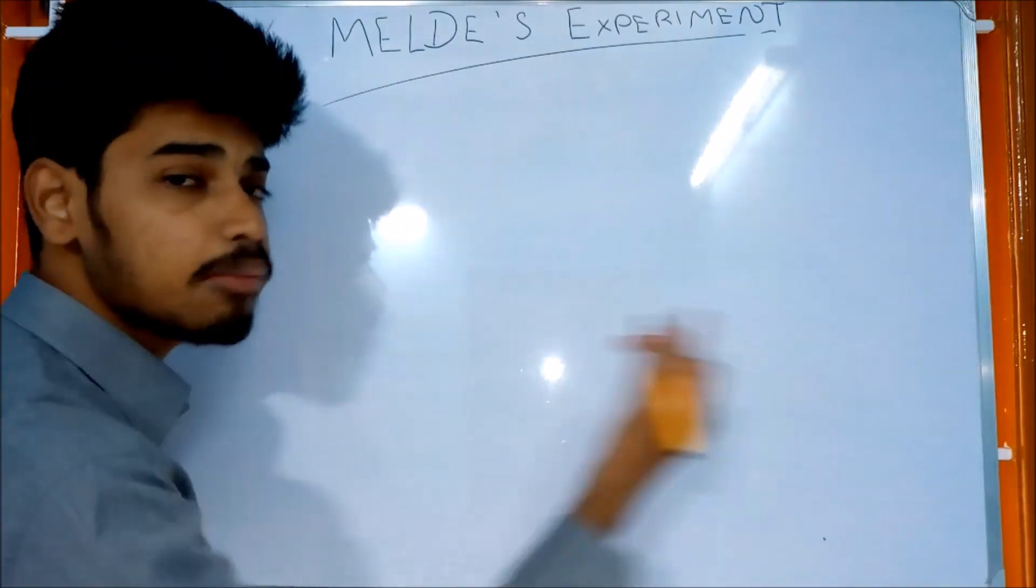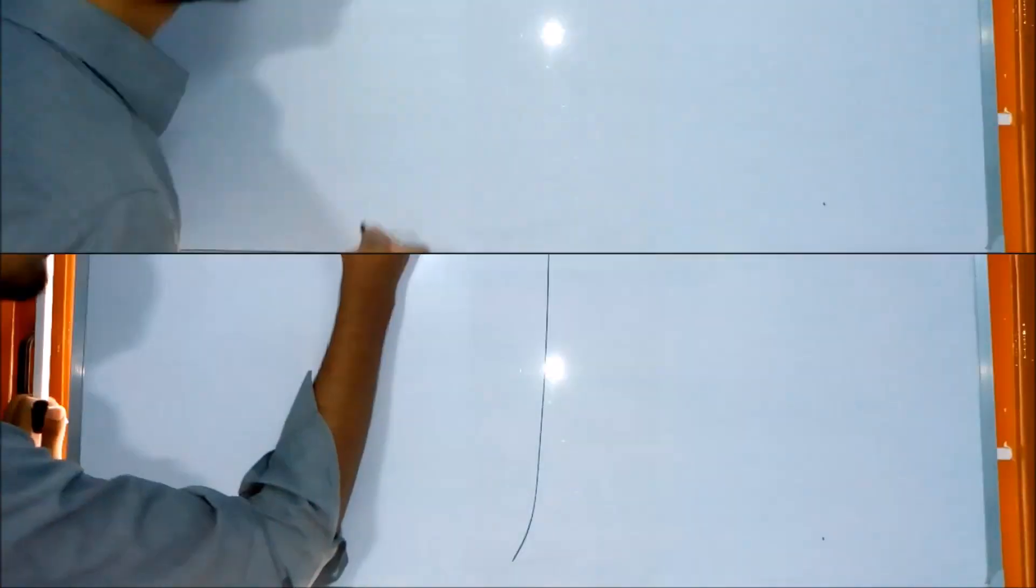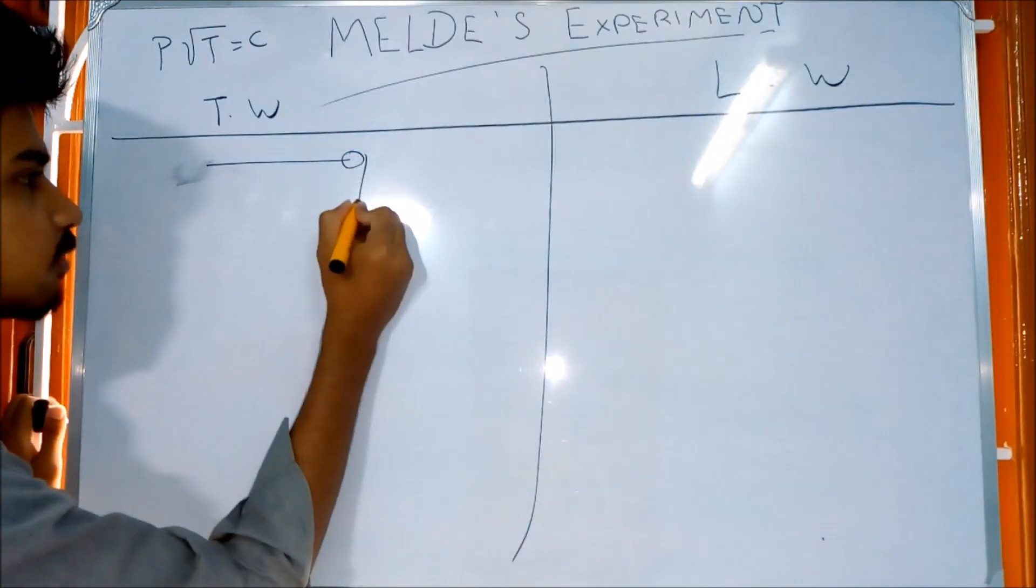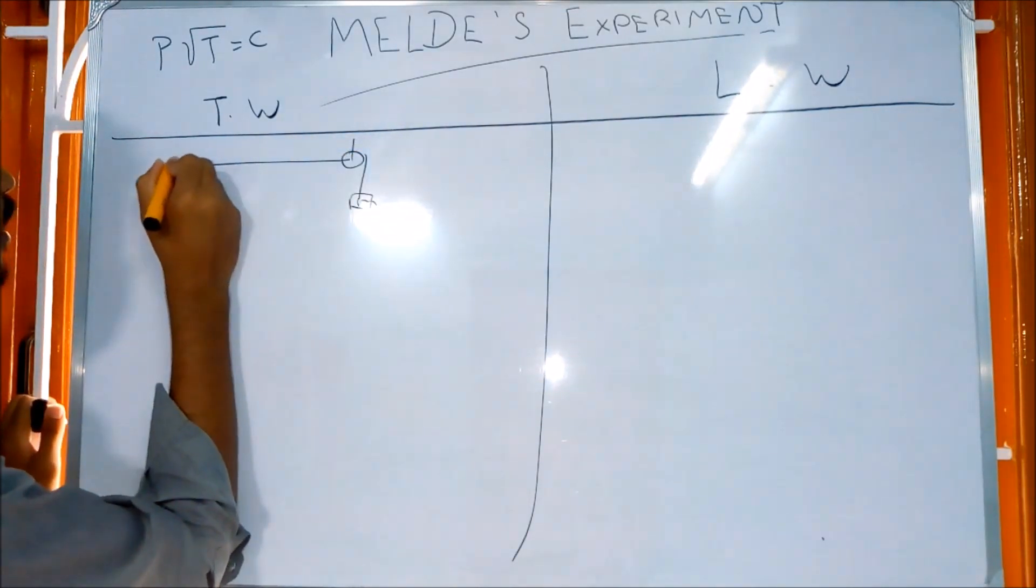To verify this, we pass the thread over a pulley. The pulley is hung with a weight. We will hold your tuning fork.